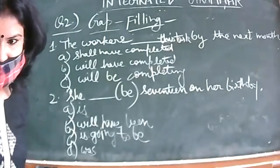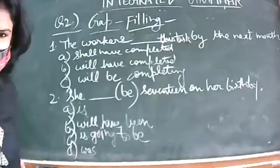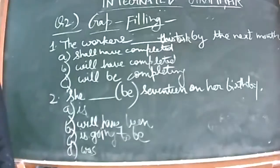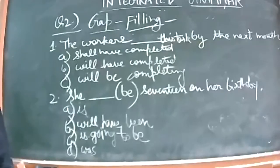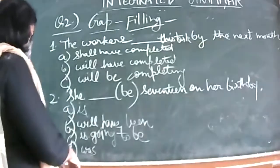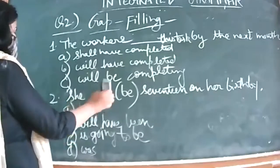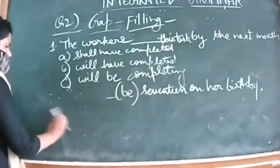Aditi says C, Arshpreet says C, Jacqueline says C, Diya says C — that is the correct answer. 'She is going to be 17 on her birthday.' Clear cut answer. Also, 'she will be 17 on her birthday' would also be correct. So this is the easy type — you can get tougher ones too.